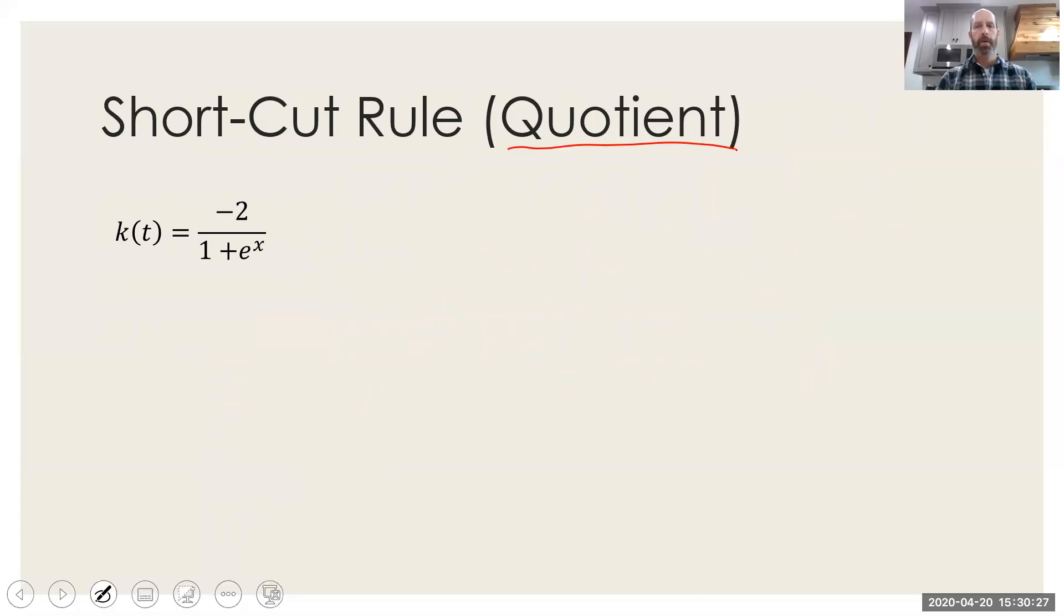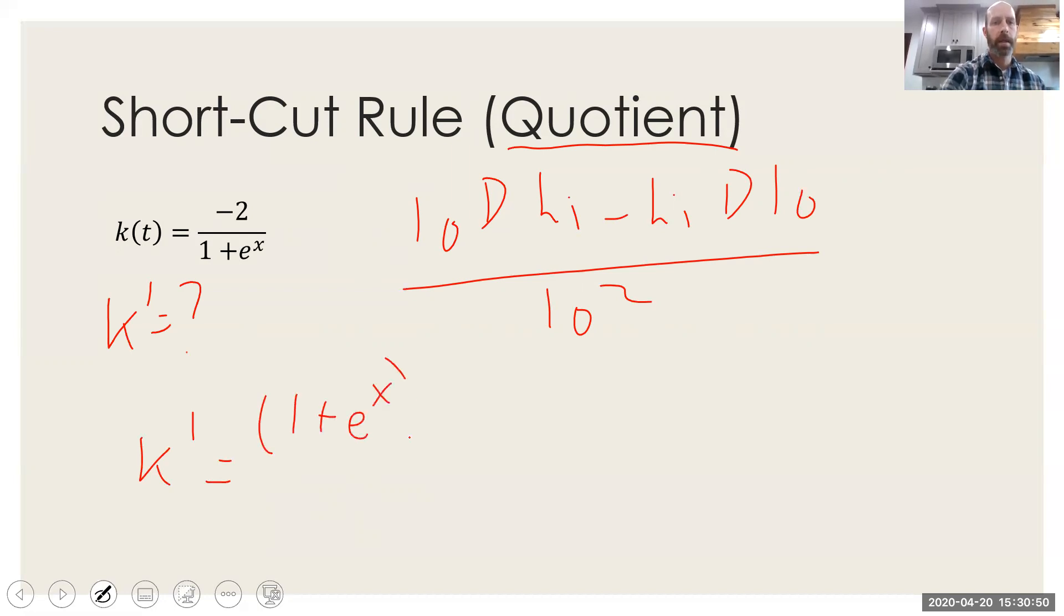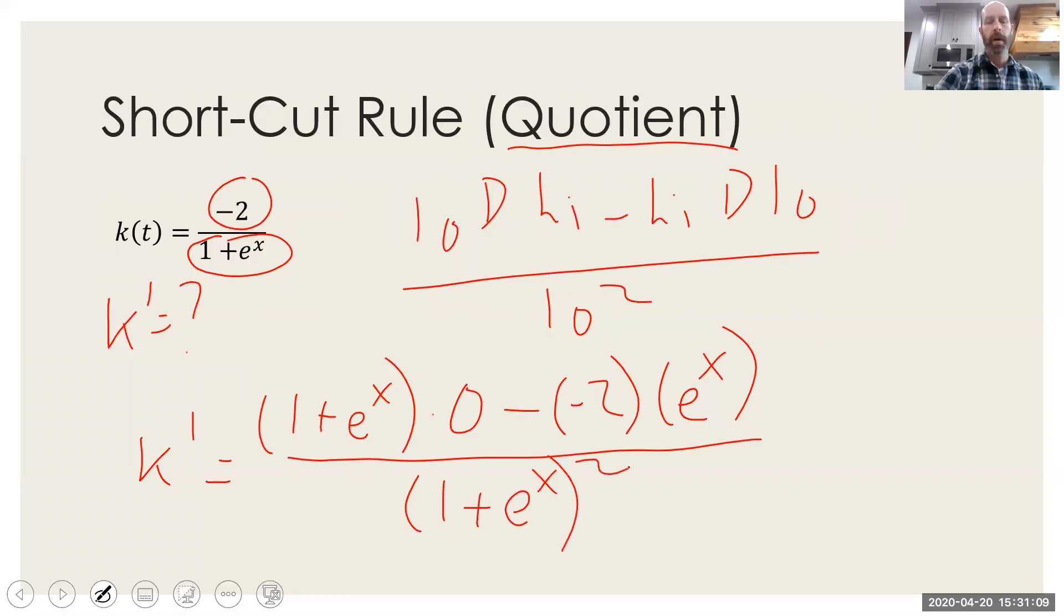So the next example is using the quotient rule. So we're trying to find k prime here. The shortcut rule is low d-high minus high d-low over low squared. So k prime is going to be low, which is one plus e to the x times the derivative of high. Well, the derivative of negative two is zero minus high, which is negative two, and then the derivative of the denominator there would be e to the x over the quantity one plus e to the x squared. The top cleans up to just 2e to the x. The bottom is just itself. And that's by the quotient rule.